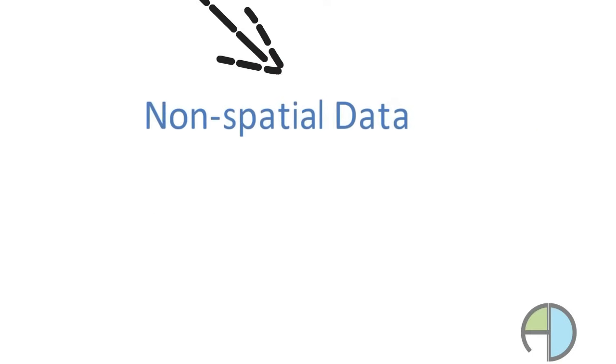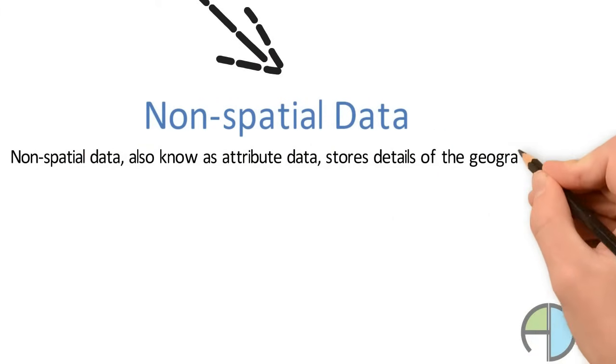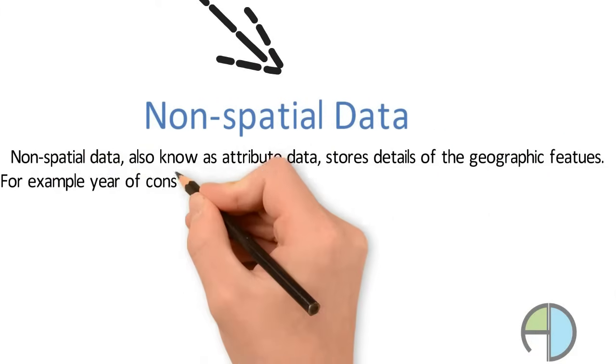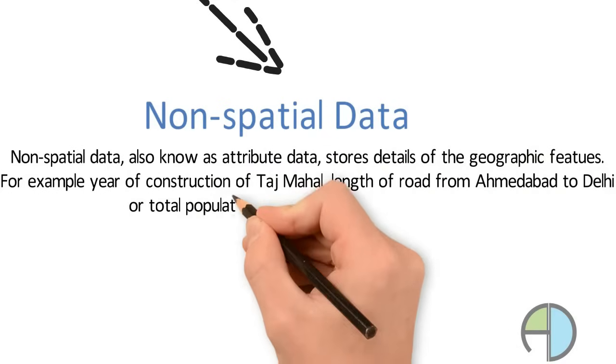In non-spatial data, information is stored mostly in a tabular format. It is also called attribute data. For example, year of construction of Taj Mahal, length of the road or a population of a state.